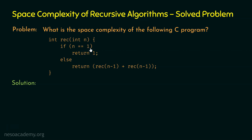If n is equal to 1, then 1 will be returned from this function. Otherwise, we need to call rec of n minus 1 twice, add whatever we get from these two functions, and return the final value. This will be an integer as the return type is integer. So within this function rec of n, we are calling rec of n minus 1 twice.